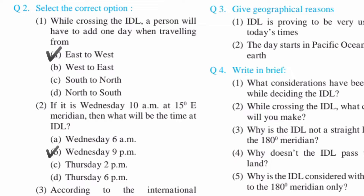Next, question number 2. Select the correct option. First: while crossing the dateline, a person will have to add one day when traveling from? Answer is A: East to West.